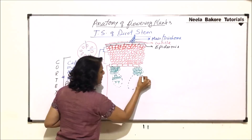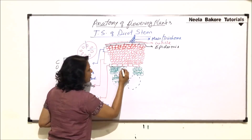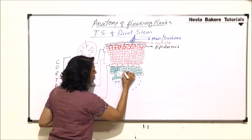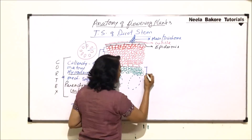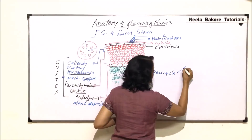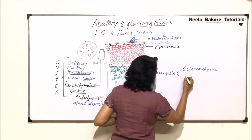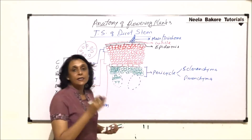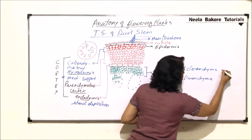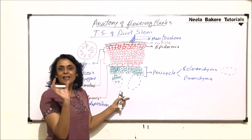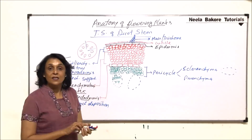In between the sclerenchymatous bands of pericycle there is regular parenchyma with loosely arranged cells. This complete band is known as pericycle, which has two parts: sclerenchyma and parenchyma. The sclerenchyma part is in the form of a spindle or semi-lunar shape, arranged just above the phloem, and in between are present the parenchyma cells.